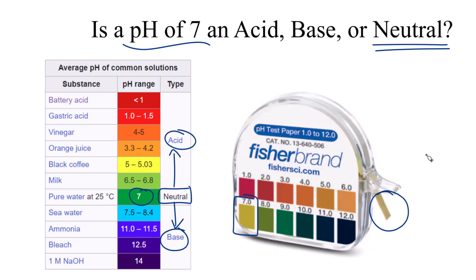Do note, if you have something like 6.99999, that still would be considered an acid by this definition. Or 7.0001 would be a base because it's greater than 7. So only 7 is considered to be neutral here. This is Dr. B — pH of 7, we call that a neutral solution. That's right!